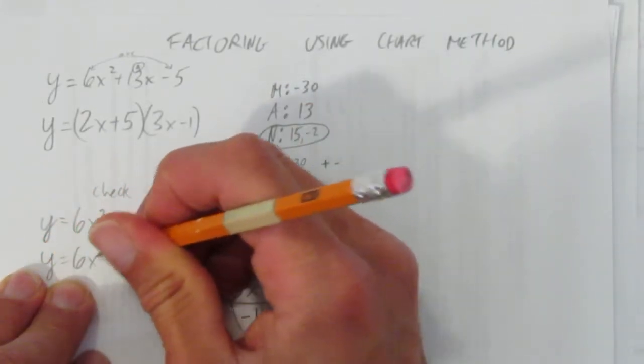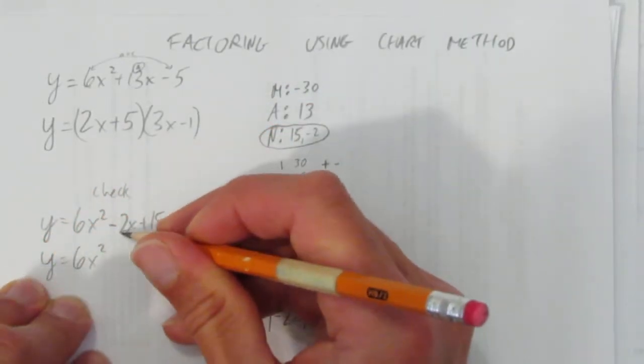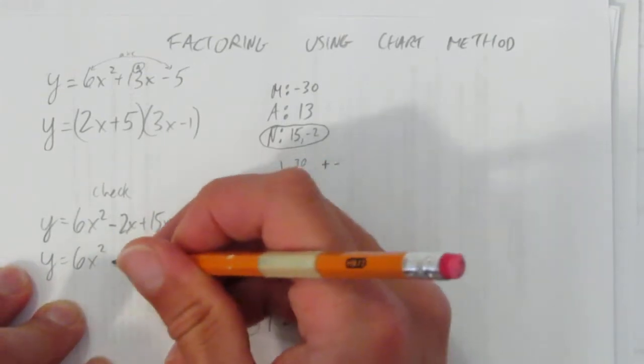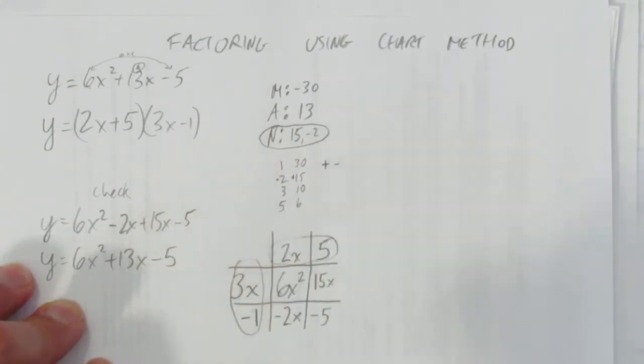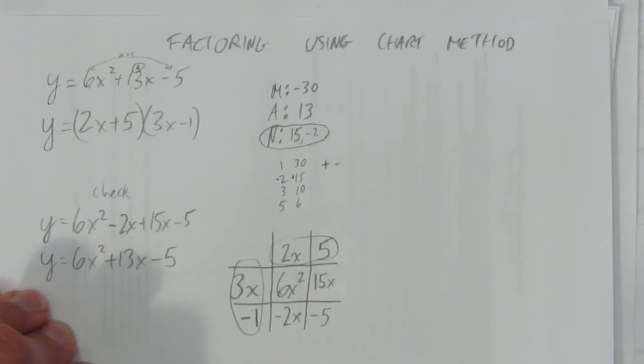Let's simplify the like terms in the middle. The 6x squared stays. But minus 2x plus 15x is plus 13x. And then minus 5. Yep. Pretty sure we got the right answer because the check checked out. So that's how you factor using chart method.